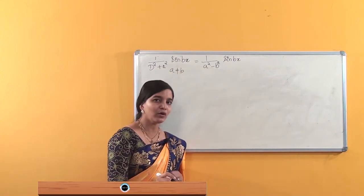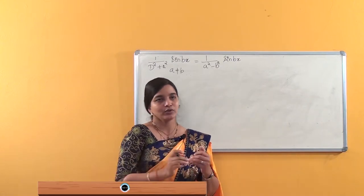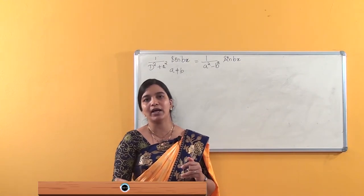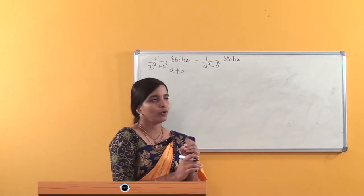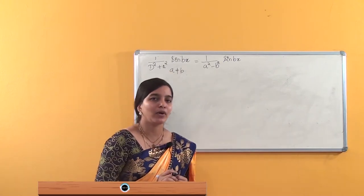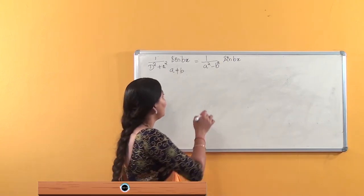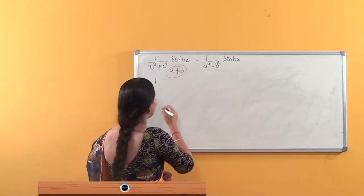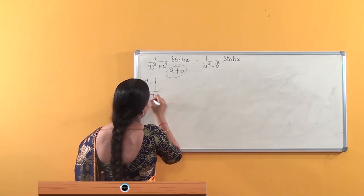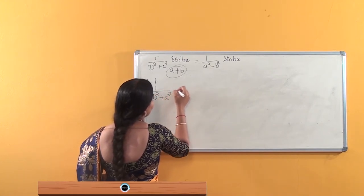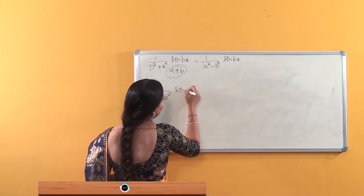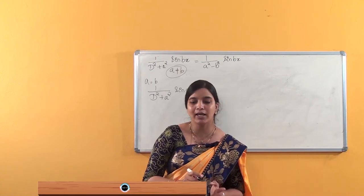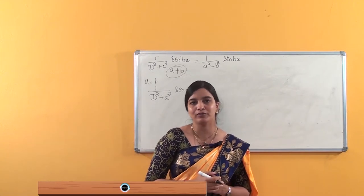But this formula is applicable only if a is not equal to b. If a is equal to b, we cannot use the same formula. So we need to use a different formula and find the solution for 1/(D²+a²)·sin(bx) or 1/(D²+a²)·cos(bx) where a equals b.